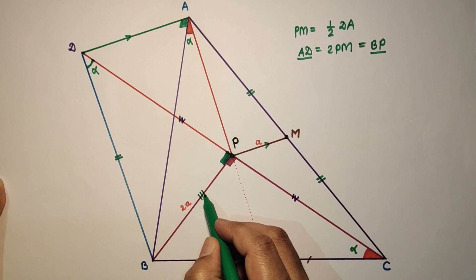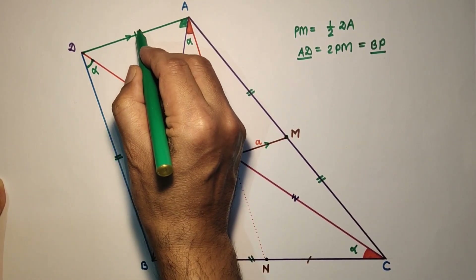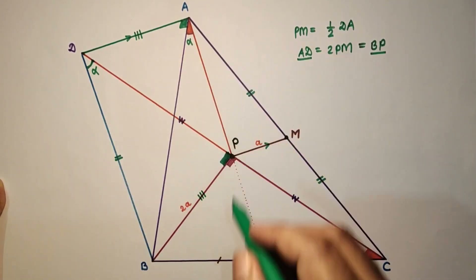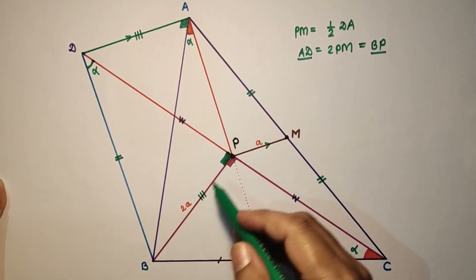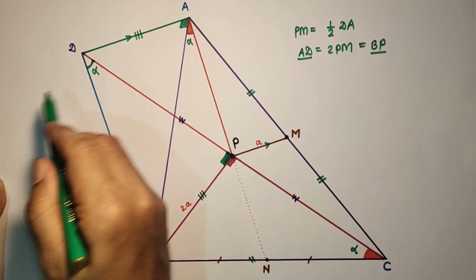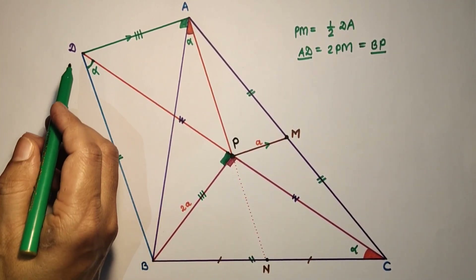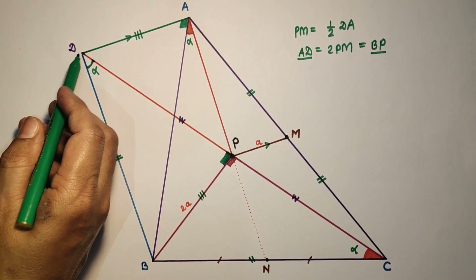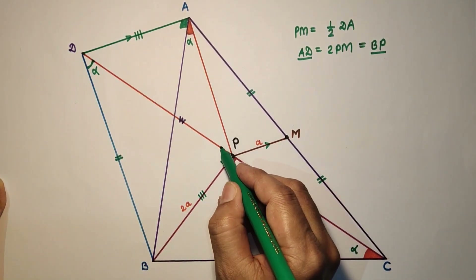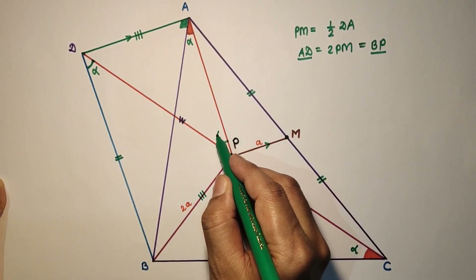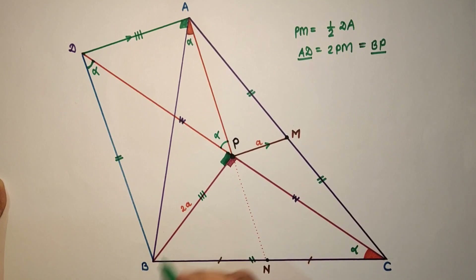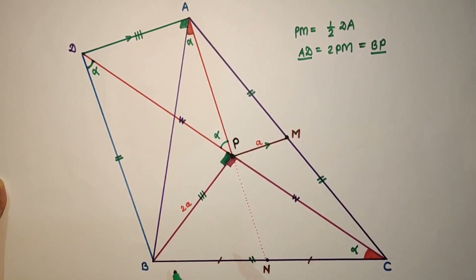BP and DA are equal, and BP subtends angle alpha in the cyclic quadrilateral. Therefore DA will also subtend angle alpha, because equal chords subtend equal angles at the circumference as well as at the center.